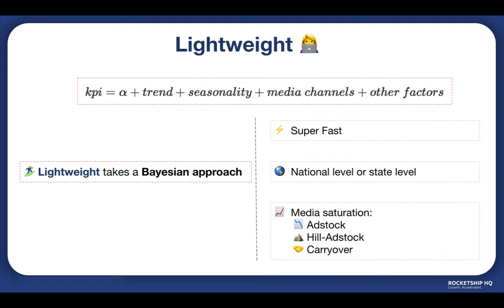Lightweight takes a Bayesian approach to MMM, unlike Facebook Robyn, allowing us to integrate prior information into modeling. Bayesian simply means an informed method that learns from previous iterations. Robyn works on ridge regression and evolutionary algorithms — as a result, while Robyn takes a lot of time doing thousands of iterations and trials, Lightweight is very fast.